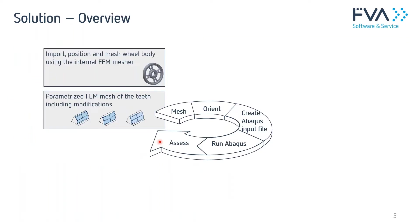Our solution starts by generating a mesh for the finite element computation. For the teeth, we rely on what is provided by STIRAC, our FE-based linear tooth contact analysis tool. It provides a very good hexahedral parametrized mesh, and all gear modifications are included. This gives us a real representation — a digital twin — of what you have on your test rig.